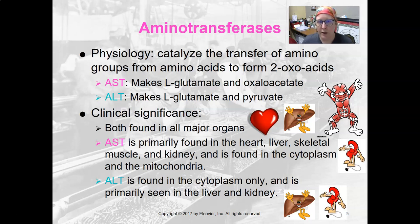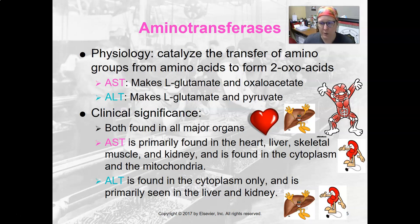The first ones we'll talk about are aminotransferases, which transfer amino acids. Those two are AST and ALT and they are both found in all major organs — the heart, liver, skeletal muscles, and kidney. But the difference is AST.